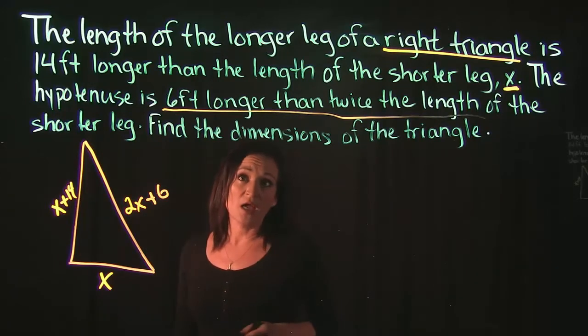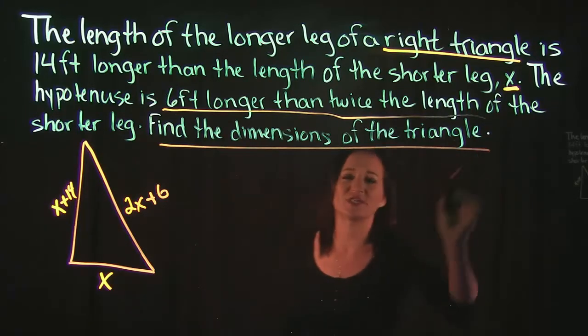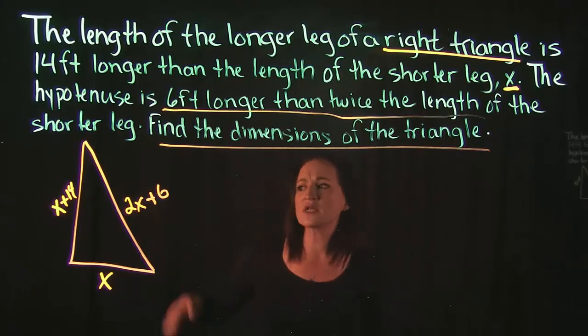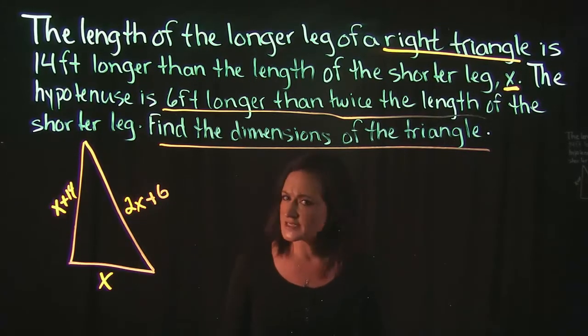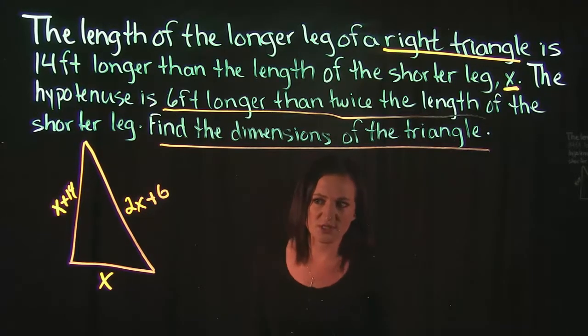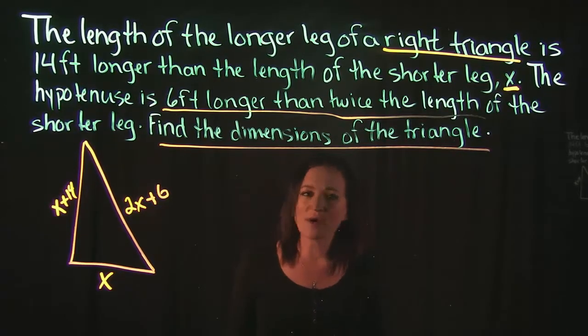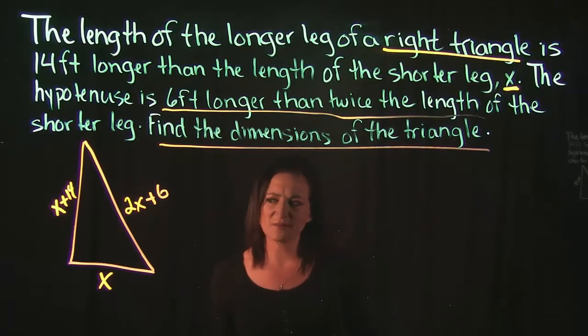Okay, so it wants us to find the dimensions of the triangle which means it wants us to find the length of all three sides. So it's not asking for an area or a total perimeter or anything like that, it just wants to know the dimensions. So that means we can't use our area formula, area equals one half base times height.